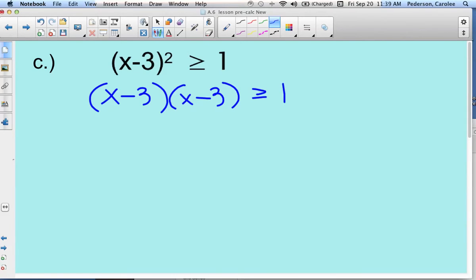Then we'll FOIL the two parenthesis, so we have first, outside, inside, last. Combine like terms, negative 3x minus 3x is negative 6x.